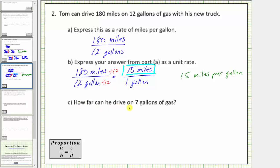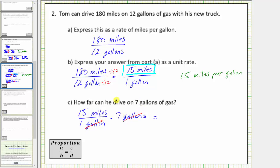For part C, how far can he drive on seven gallons of gas? Now that we have the unit rate, this is very straightforward. Tom can drive fifteen miles per gallon, so if we find the product of the unit rate and seven gallons, we can determine the number of miles he can drive. Beginning with the unit rate of fifteen miles per one gallon, we multiply by seven gallons. The units of gallons simplify out, leaving us with fifteen miles times seven. Fifteen times seven equals one hundred five, giving us one hundred five miles. So Tom can drive one hundred five miles on seven gallons of gas.